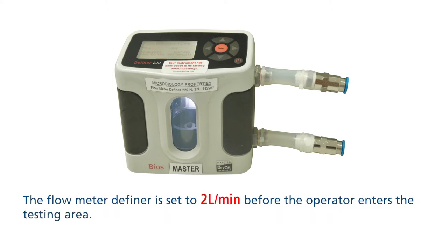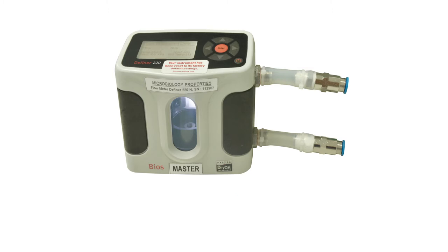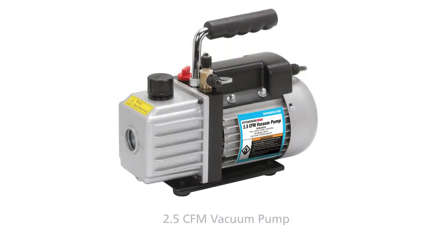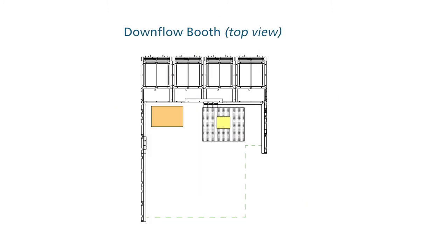The flow meter definer is set to 2 liters per minute before the operator enters the testing area. When the operation starts, the vacuum pump is immediately powered on.